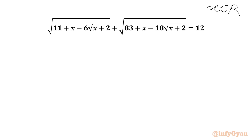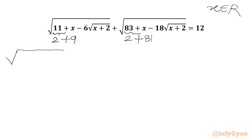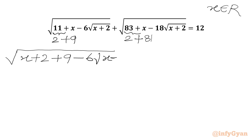Let's get started by splitting 11 as 2 plus 9, and 83 we will write as 2 plus 81. So we can write our equation as square root of x plus 2 plus 9, which is x plus 11, minus 6 times square root of x plus 2.